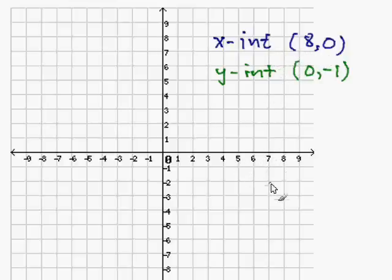And that is right here. Then I'm going to plot my y-intercept at zero comma negative one, which is right here. Now that I have two points, I can create my line by connecting the two points. And that is the line for my equation. This completes my problem.